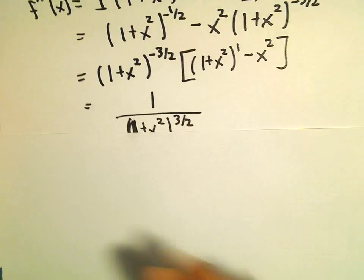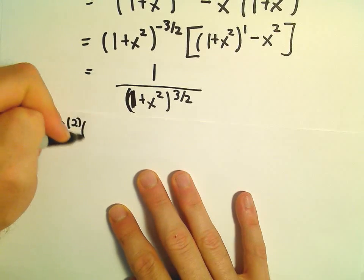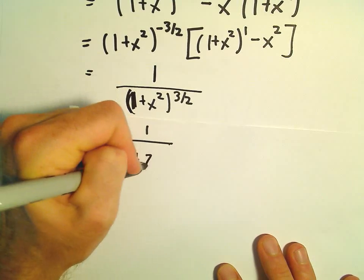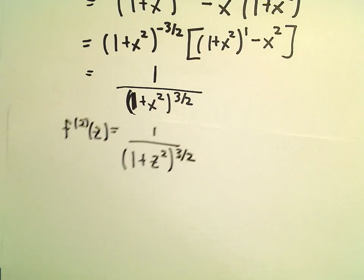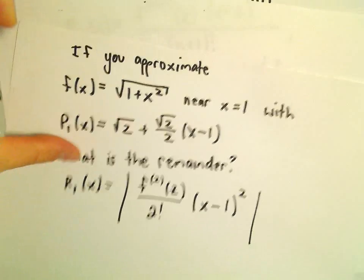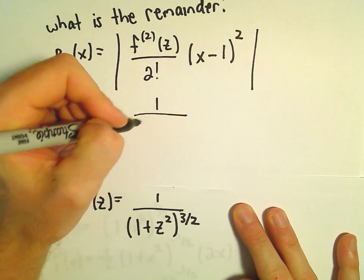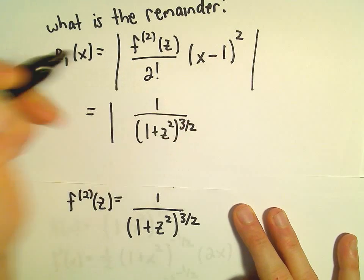Alright, so now it says, therefore, our second derivative evaluated at z would be 1 over 1 plus z squared to the 3 halves power. And now I'm just going to replace that back in my expression. So if we plug that in, it says we'll have 1 over 1 plus z squared to the 3 halves power.